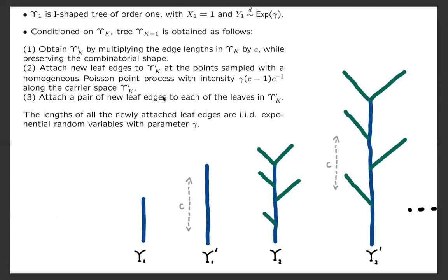Each newly attached leaf edge is an i.i.d. exponential random variable with parameter gamma. They are obviously independent of each other and of all the prior history. So let me draw it right here.